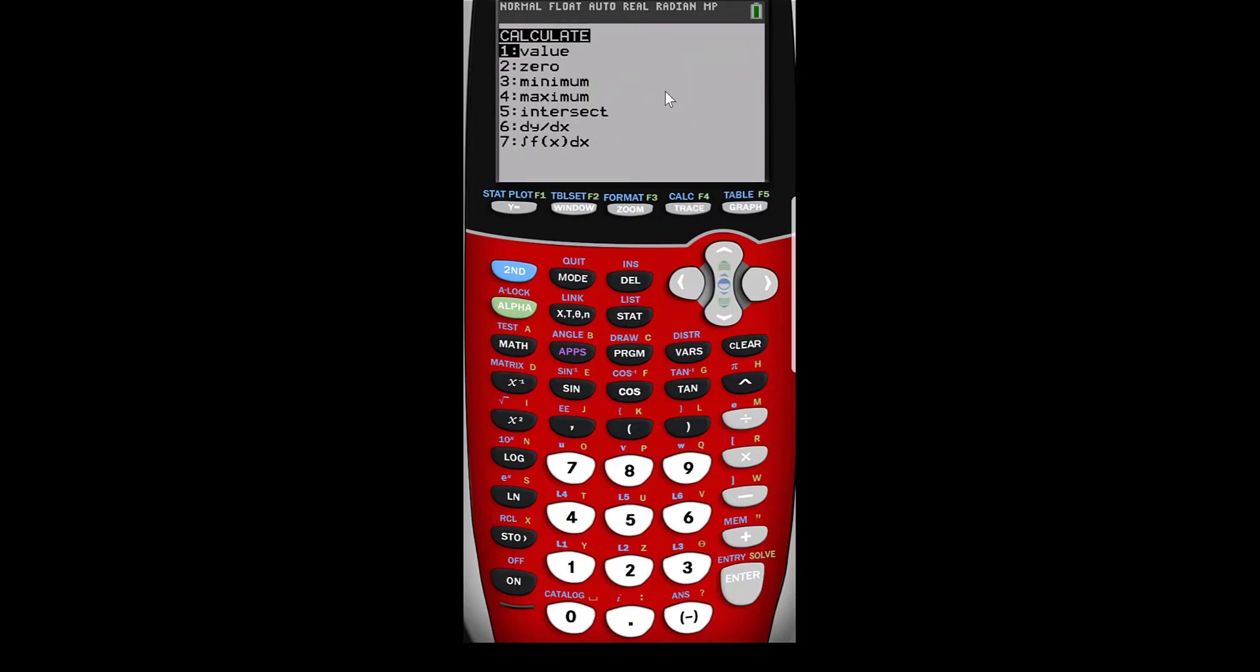So you push second calc zero and you pick your left end point, which is here, and you pick the right bound, which is here, and then you push the zero and then there you go. You get 0.948 and we do that one more time. So I'll do my left bound over here, I'll do my right bound here, and my guess is about right there, and I get 3.5.